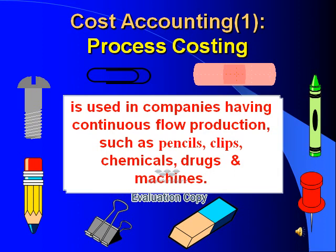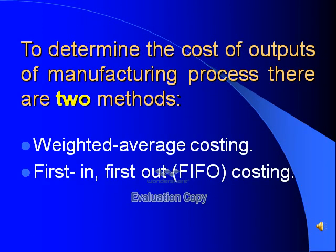One of our subjects in cost accounting is process costing. Process costing is used in companies having continuous flow production, such as pencils, clips, chemicals, drugs, and machines. To determine the cost of outputs of a manufacturing process, there are two methods: the weighted average costing method and the first-in, first-out or FIFO costing method. I will start with the weighted average costing method.